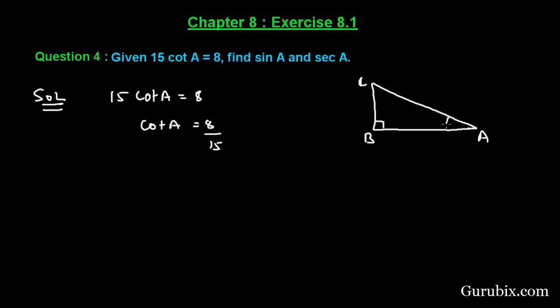Right angled at B, and this is angle A. We know that cot A equals side adjacent to angle A over side opposite to angle A. So side adjacent to angle A is AB, let it be 8k, and side opposite to angle A is BC, so let it be 15k.